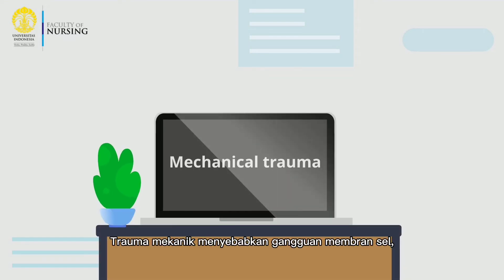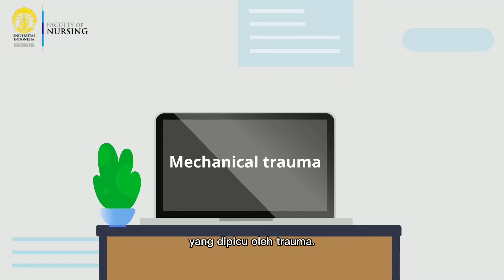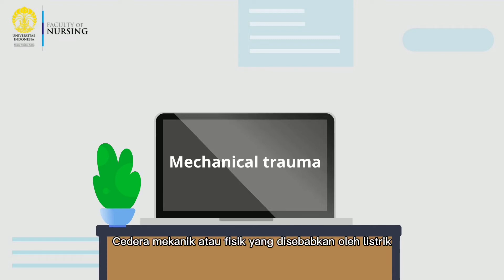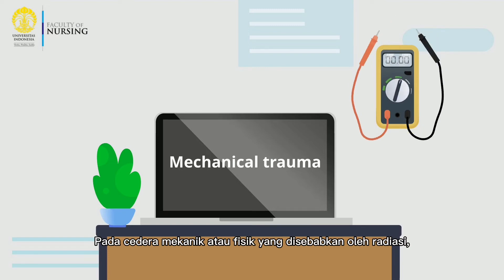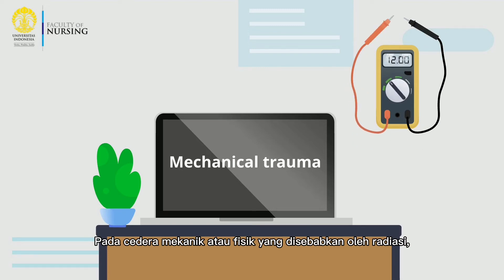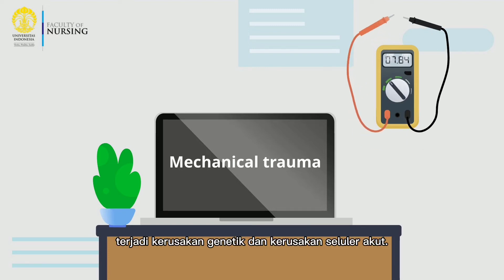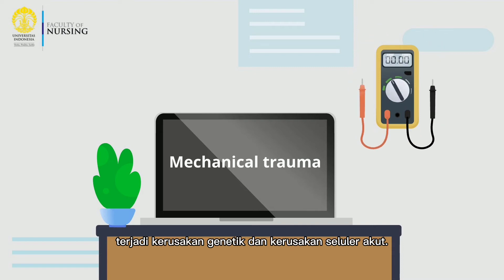Mechanical trauma causes cell membrane disruptions, hypoxia from blood loss or impaired blood flow, and inflammatory swelling triggered by trauma. Electrical injury disrupts nerve impulses and the heart. Radiation causes genetic damage and acute cellular damage.